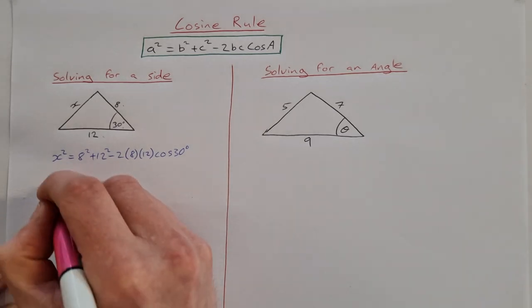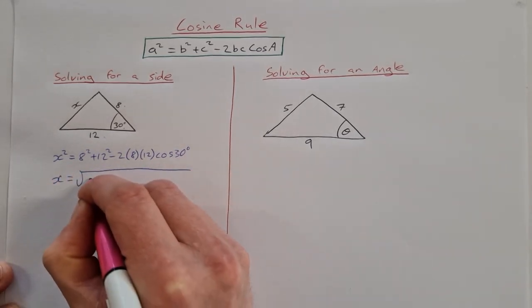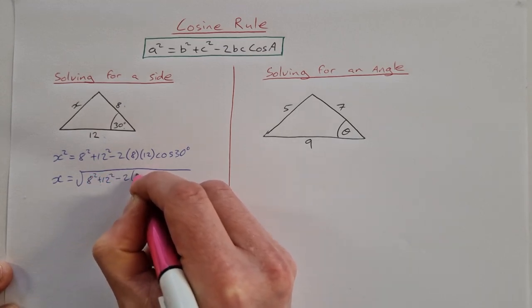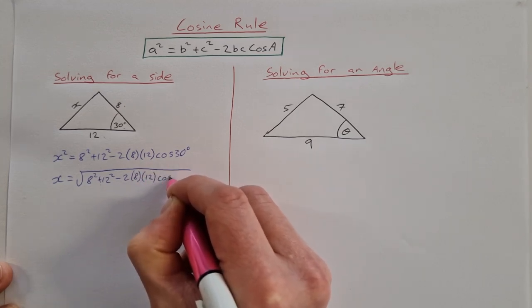And then in one step I can take the square root of both sides like this: 8 squared plus 12 squared minus 2 times 8 times 12 cos 30.